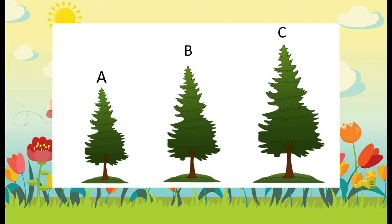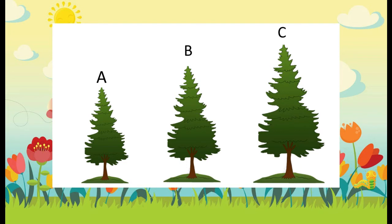Now let's look at these three pictures. I have three different kinds of height from this picture of three trees — I categorize them as A, B, and C. You told me before that the pine tree is tall. So the B tree is a little bit taller than the A tree, so we call that one taller. The third one is the one with the most height, so we call that one tallest. Tall, taller, tallest.